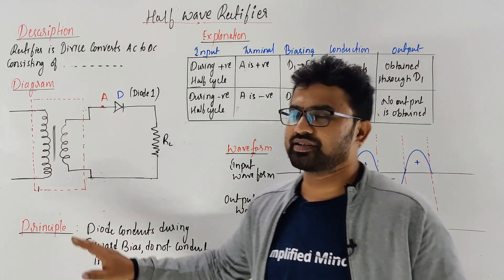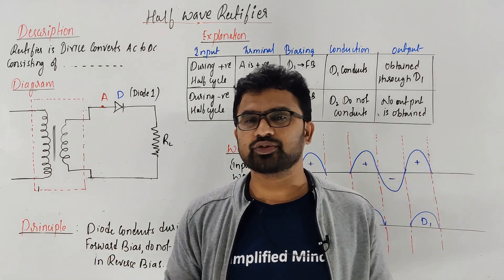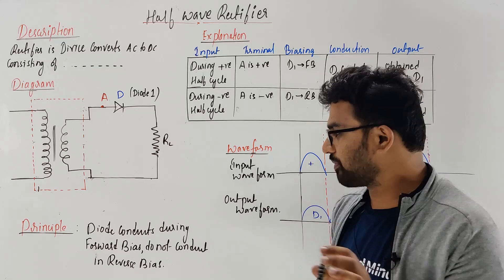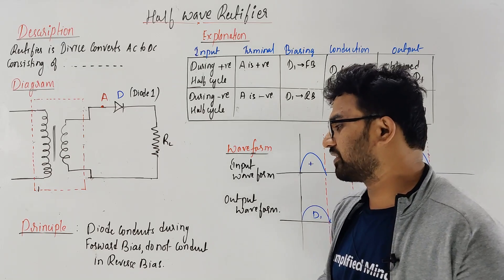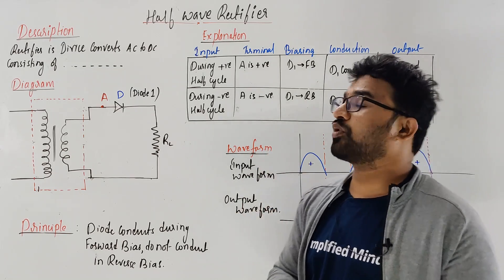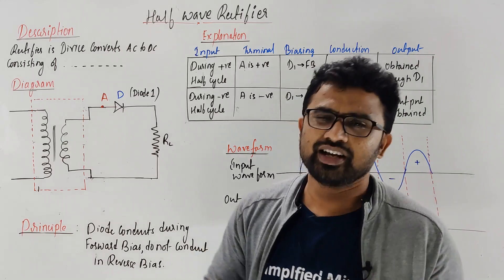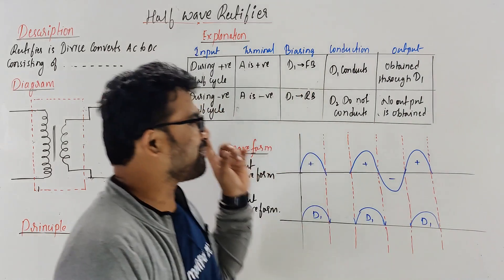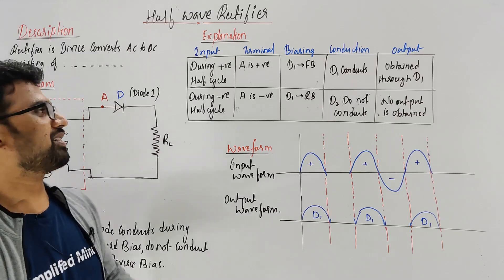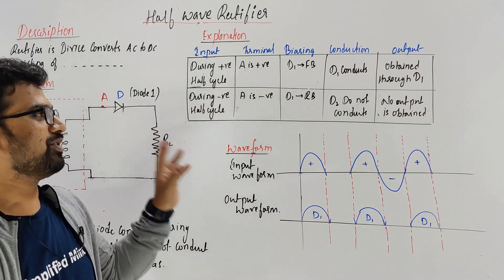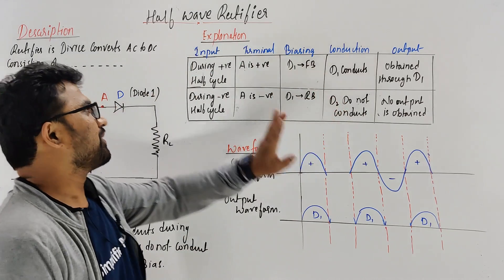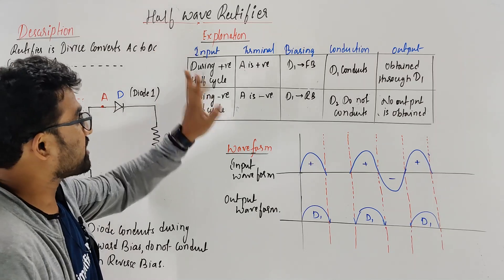Coming to the principle — same principle here also: the diode conducts during forward bias and does not conduct in reverse bias. Next, coming to the working table — same table column format as given for the full wave rectifier, but with changes. So during the positive half cycle...